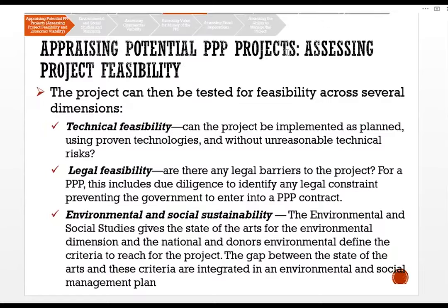Appraising potential PPP projects — assessing project feasibility. The project can be tested for feasibility across several dimensions. One: technical feasibility — can the project be implemented as planned using proven technology and without unreasonable risk? Two: legal feasibility — are there any legal barriers to the project as a PPP? This includes due diligence to identify any legal constraints preventing the government from proceeding with the PPP.